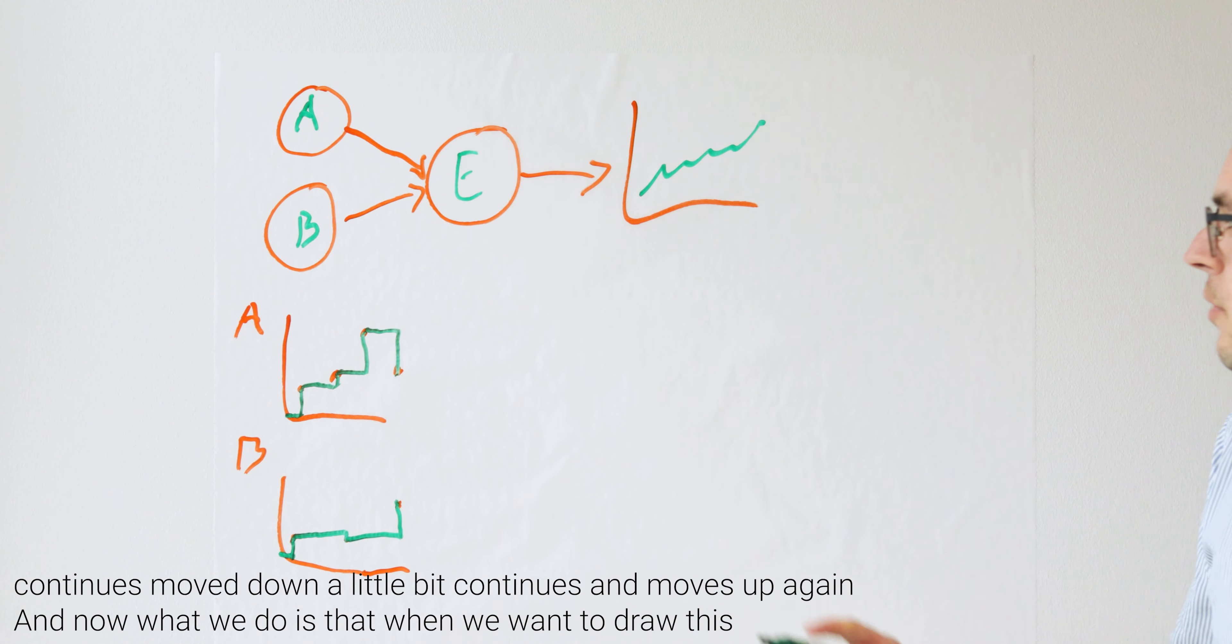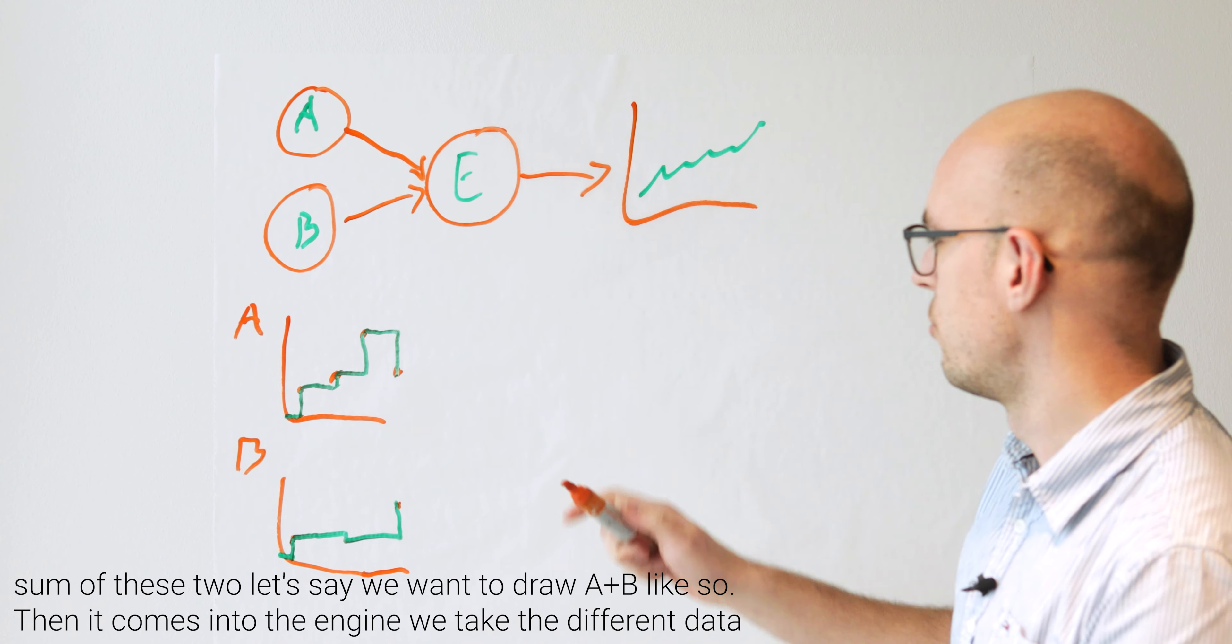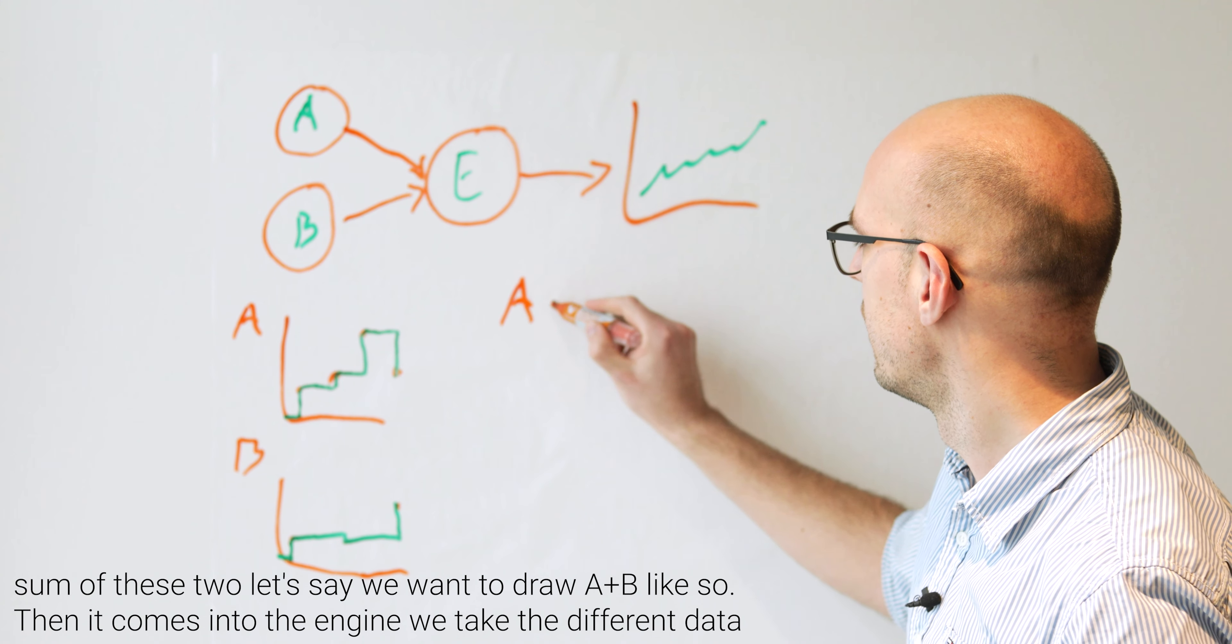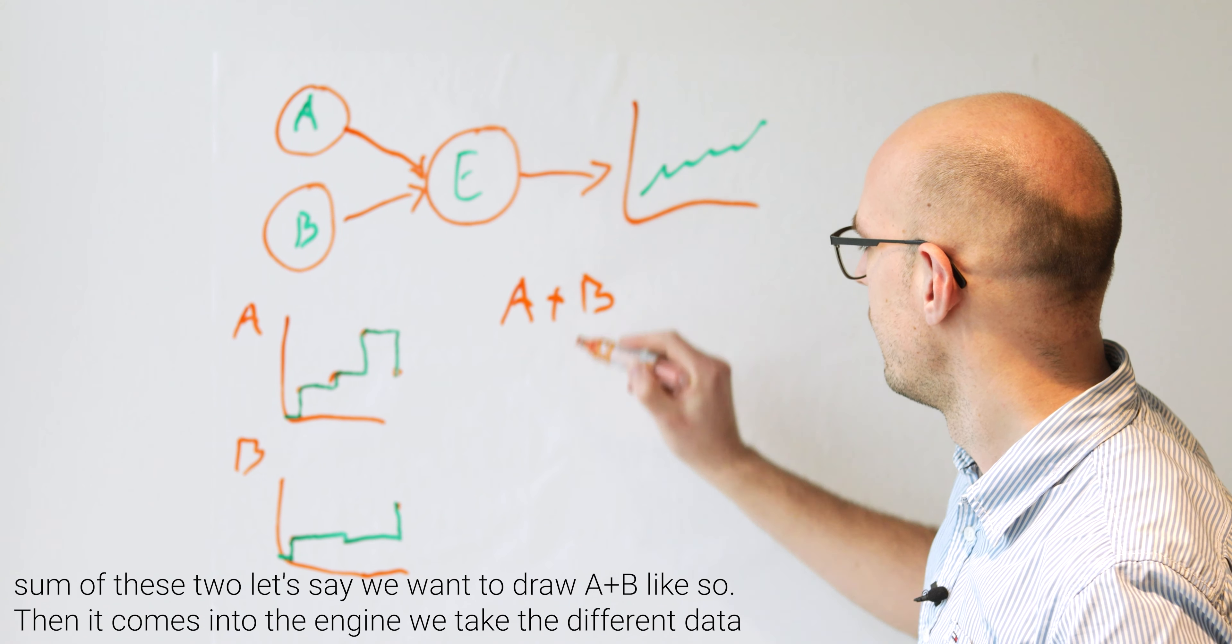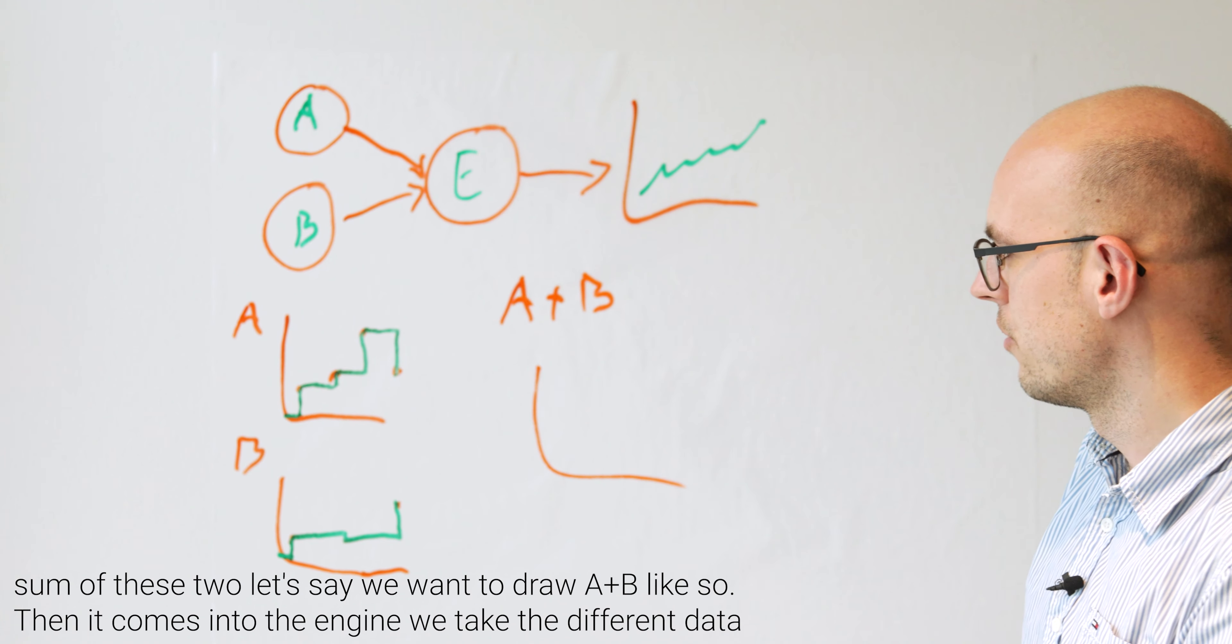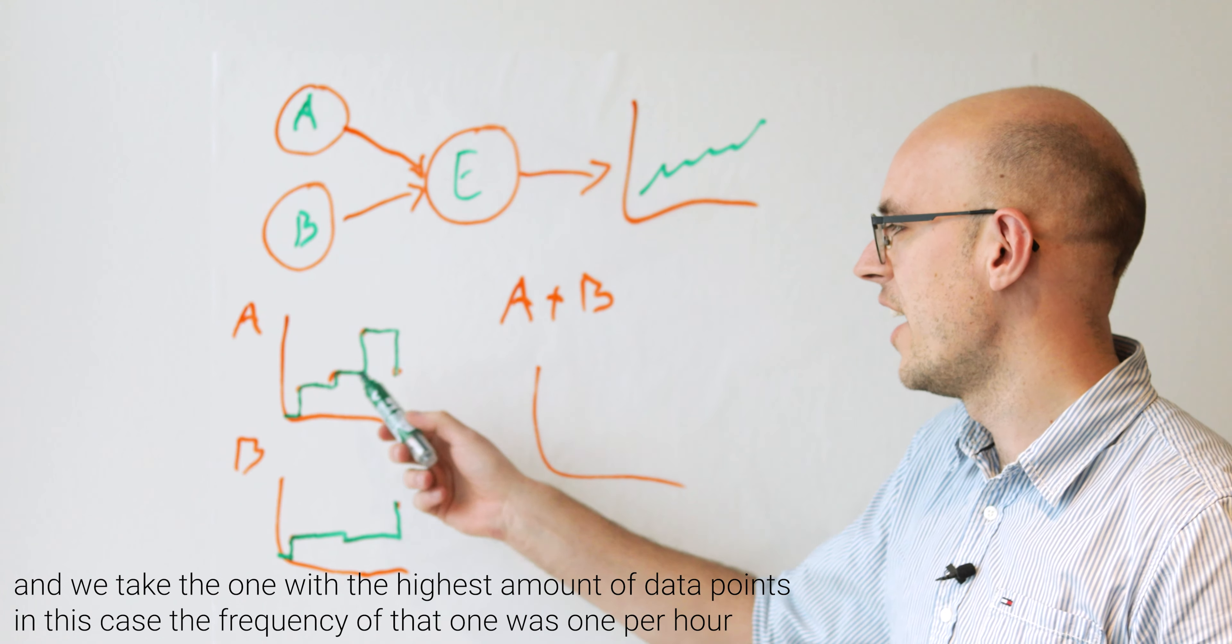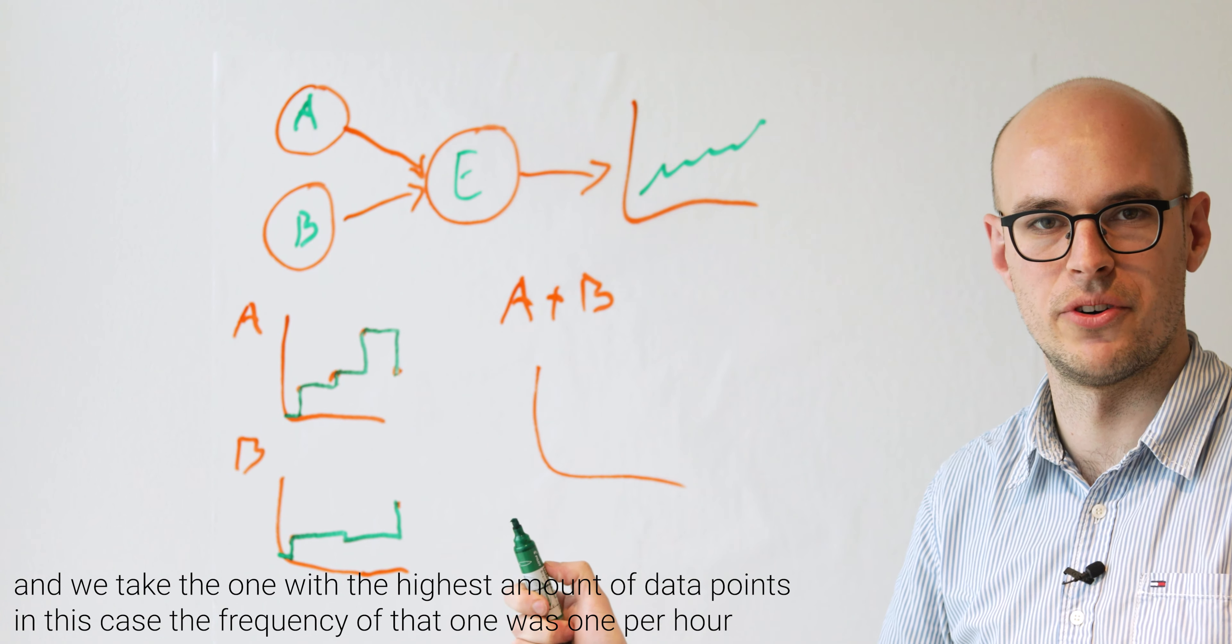And now what we do is that when we want to draw this sum of these two, let's say we want to draw A plus B, like so. Then it comes into the engine, we take the different data, and we take the one with the highest amount of data points.